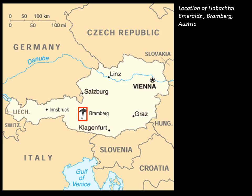The Habachtal Valley is near a town called Bramberg, very easy to get to — fly into Innsbruck or Salzburg, then take a train or drive. Bramberg itself is a beautiful town with a museum where you can see many emerald specimens, aquamarines, and other interesting minerals. They run tours, I believe once a week in summer, where they take you up and you can start panning for emeralds and looking for other minerals.